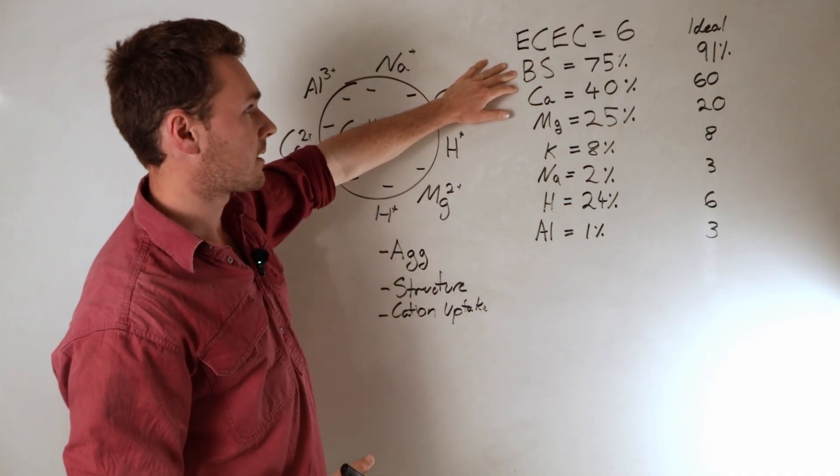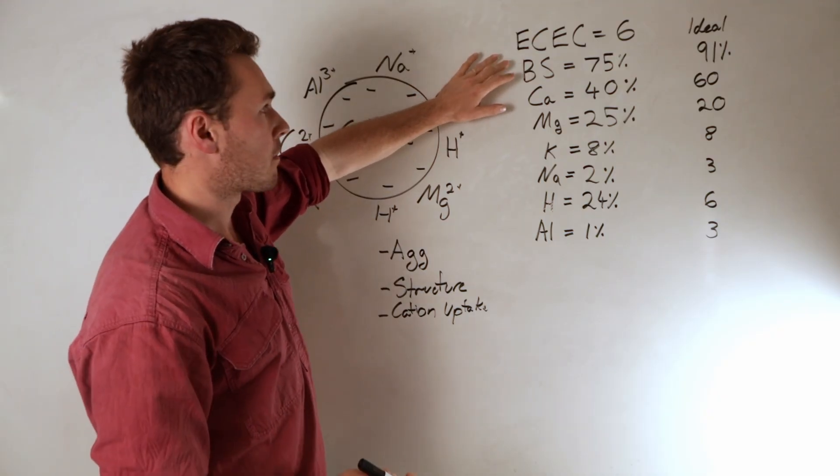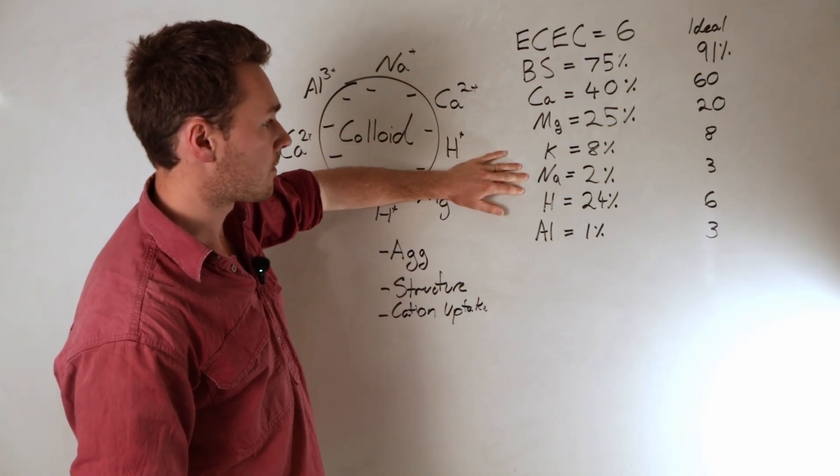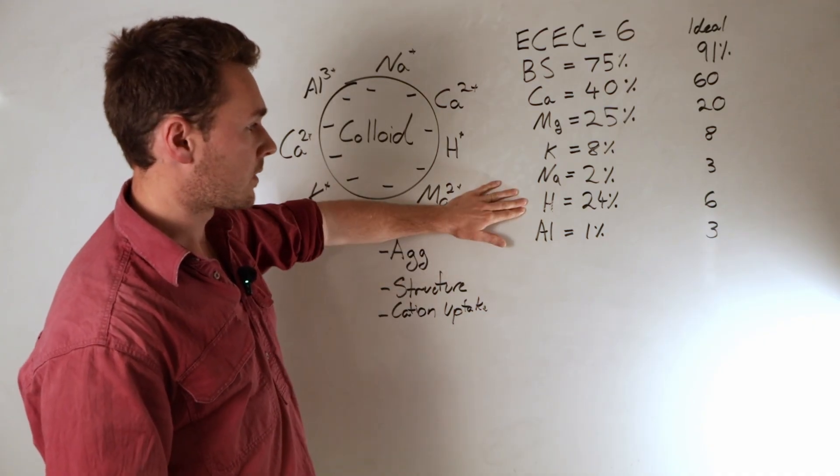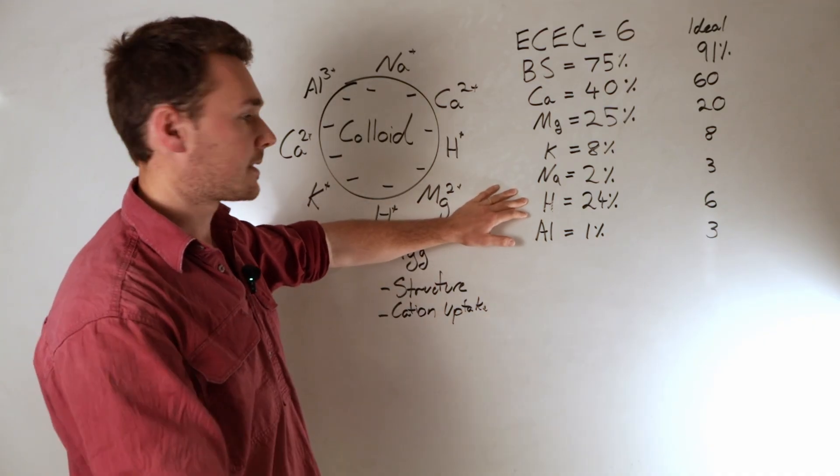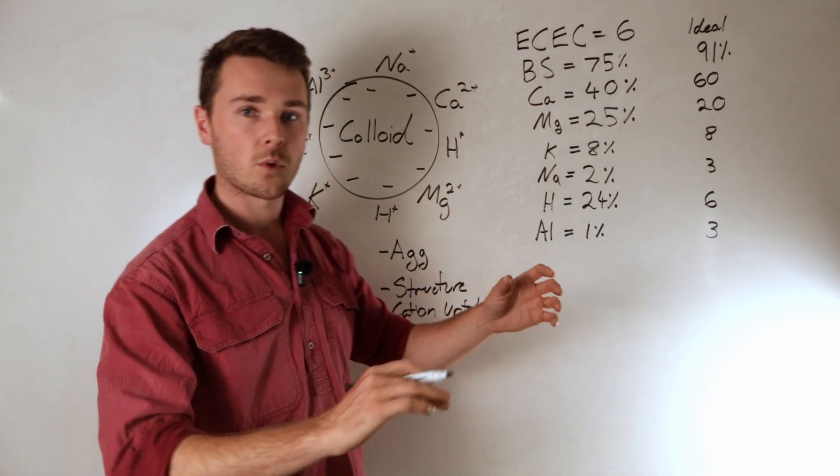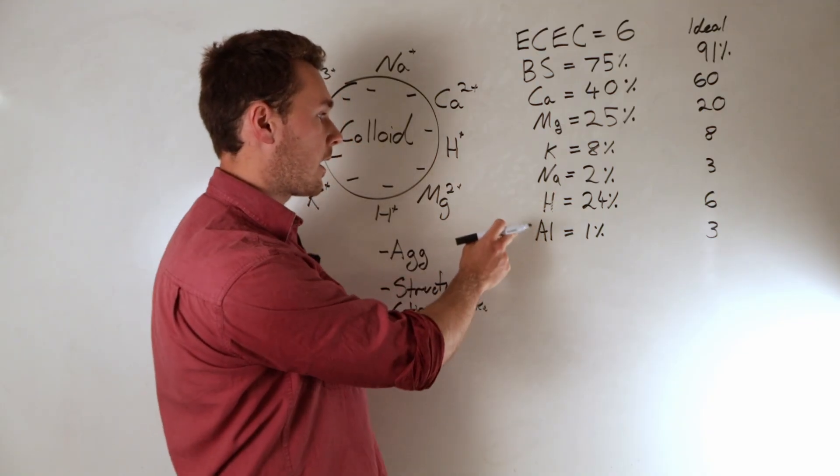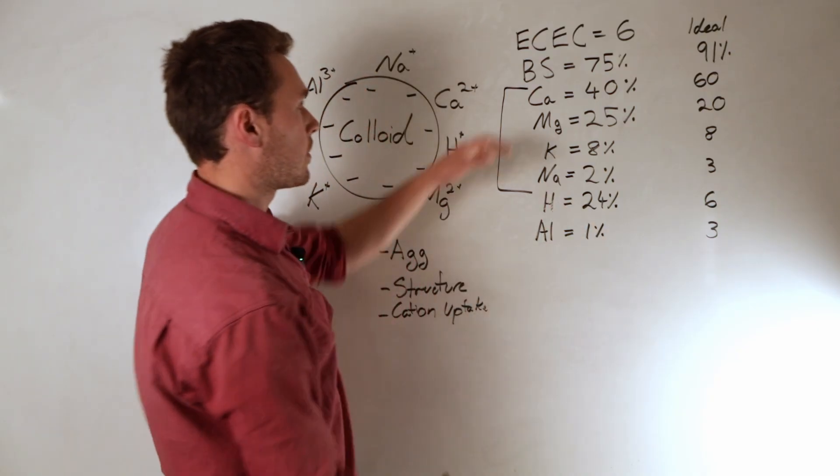Next we want the base saturation. So base saturation is the amount of the base cations that make up clay colloid. The base cations are calcium, magnesium, potassium, sodium. Hydrogen and aluminum are acidic cations, obviously because hydrogen is what causes acidity. Aluminum dissolves in water and then it breaks apart the water and then releases the hydrogen. So that causes acidity because it increases the amount of hydrogen in the soil solution. All these together make up the base saturation.